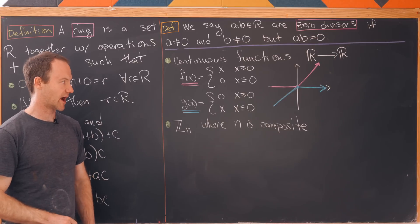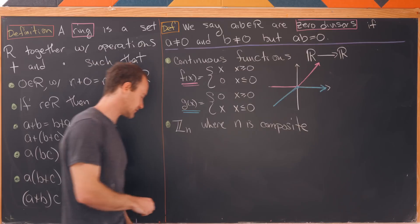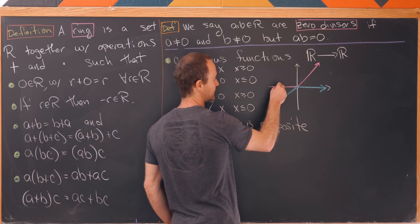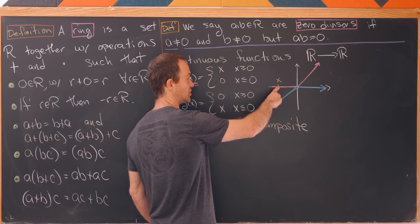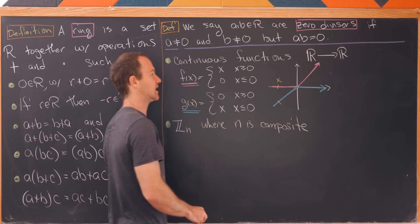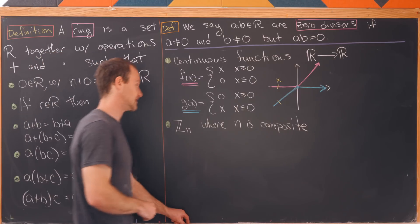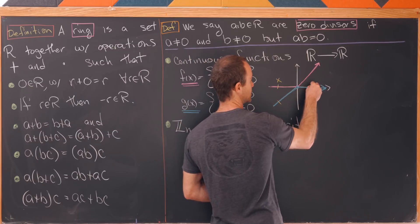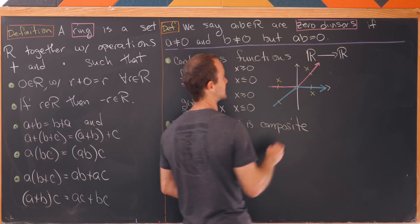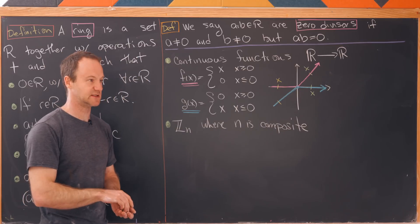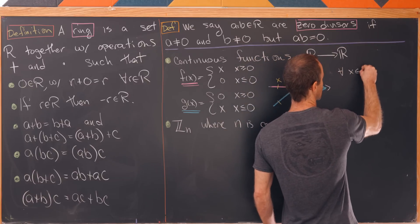But maybe the important thing here is regardless of what real number you're at when you multiply these two functions you'll always get zero. So for instance if you pick this value of x notice the magenta function is zero but the blue function is non-zero but you take that product and you get zero. Versus when you take this value of x the blue function is zero but the magenta function is non-zero. Well you take their product and you get zero.